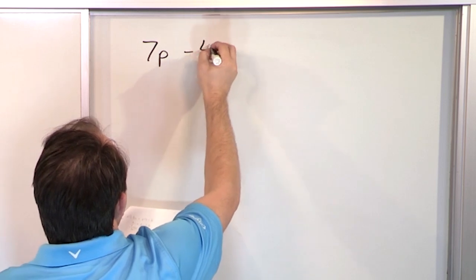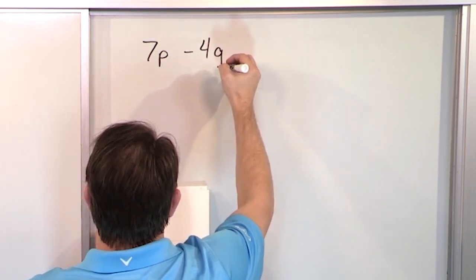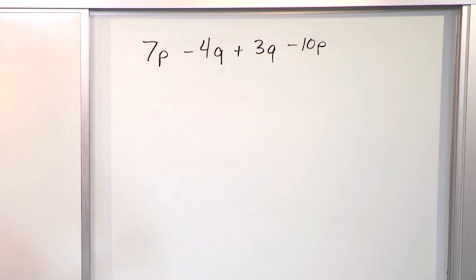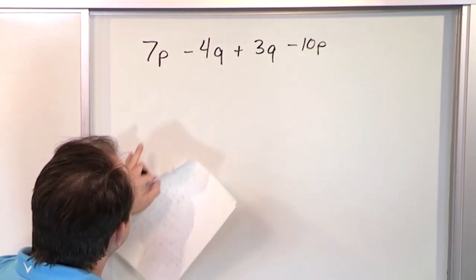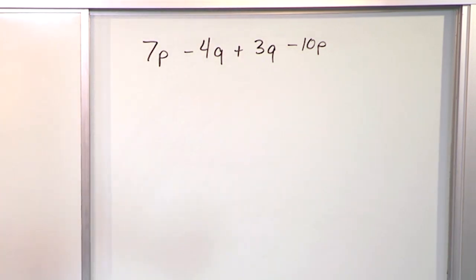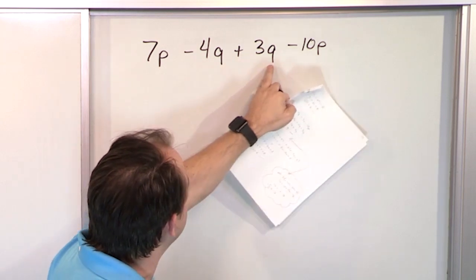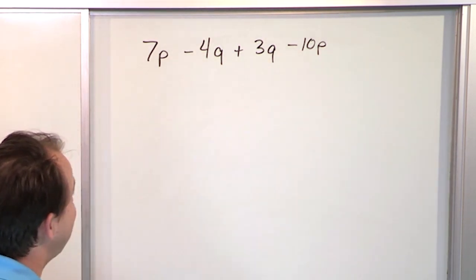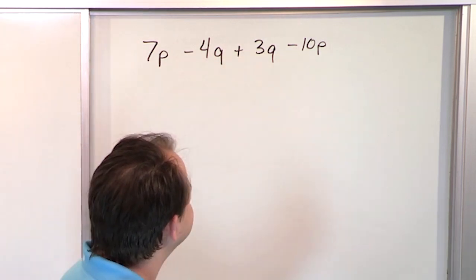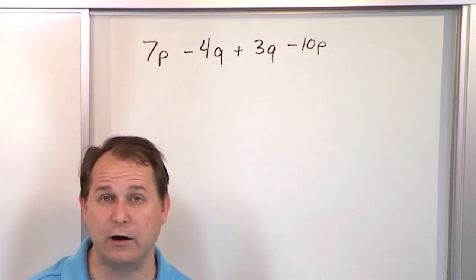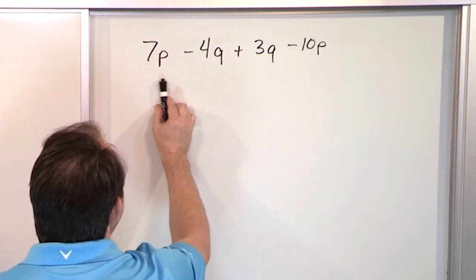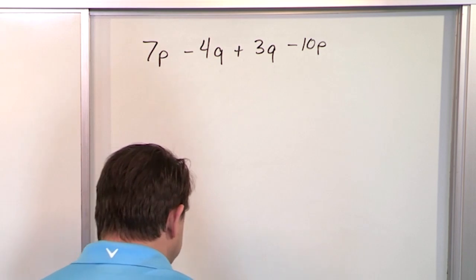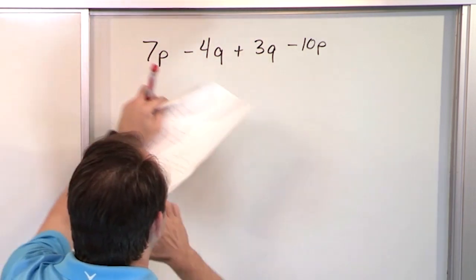Next problem: 7 times P minus 4 times Q plus 3 times Q minus 10 times P. Do we have any parentheses? No. Any exponents? No. Multiplication or division? Well, things like 7P are multiplied together, but there's nothing further to simplify. So we have a bunch of addition and subtraction. Working left to right, you get worried because you can't add 7P and negative 4Q — they're different terms. What you can do is regroup the terms — you're allowed to rearrange as needed.